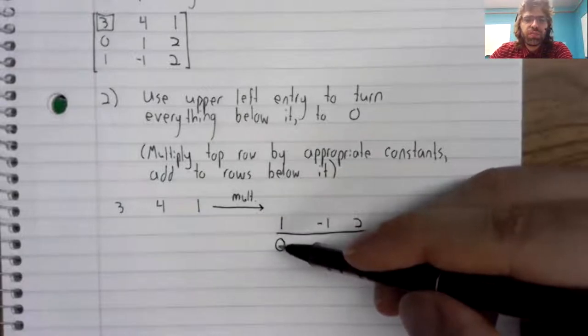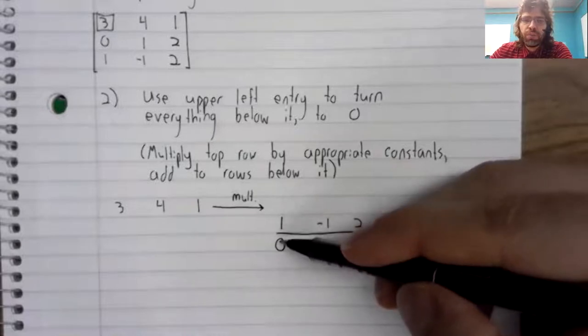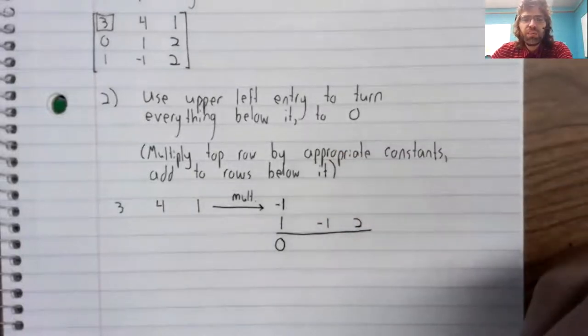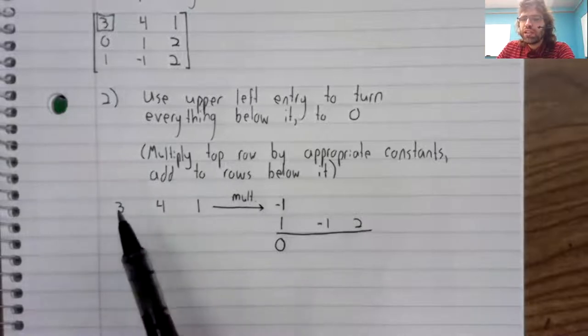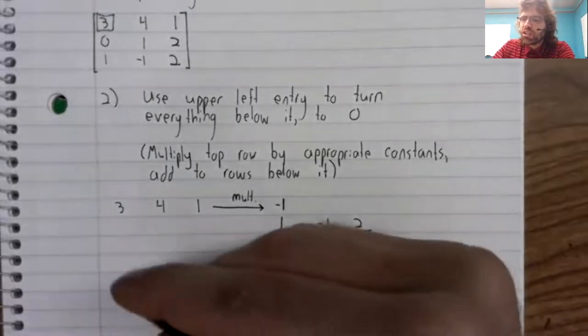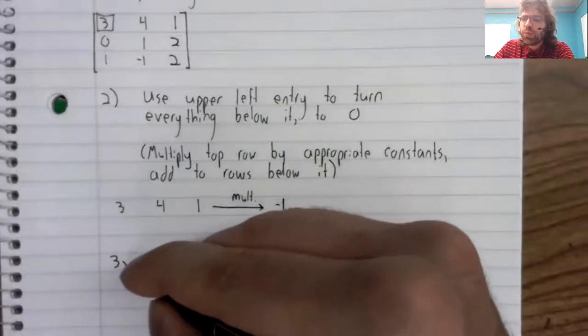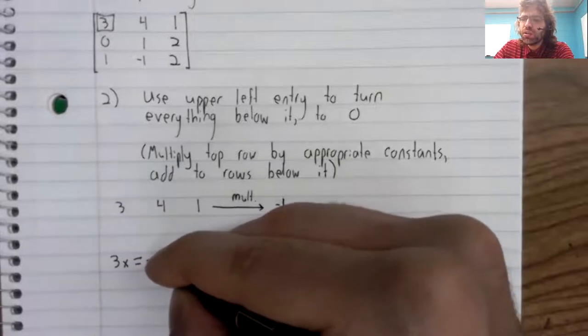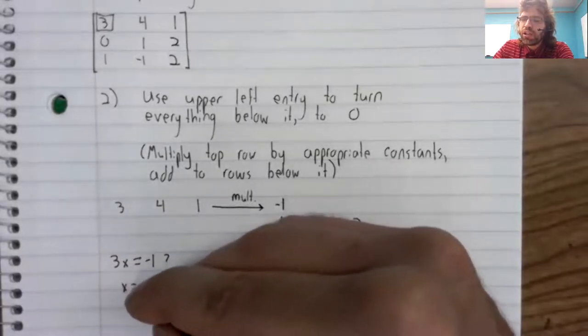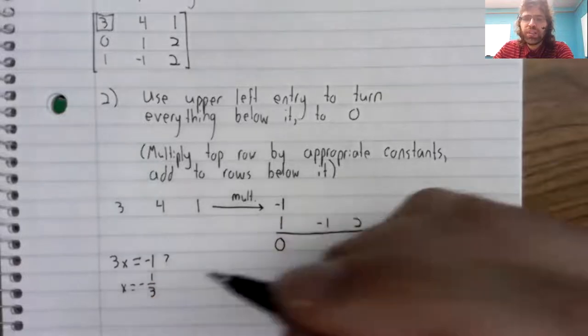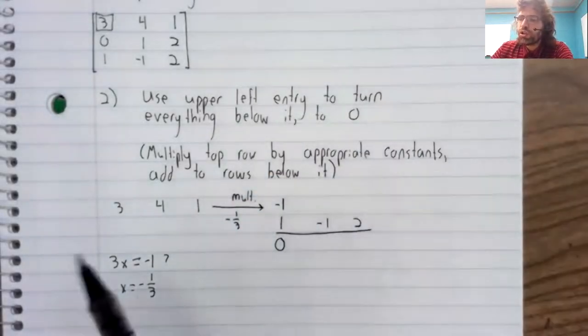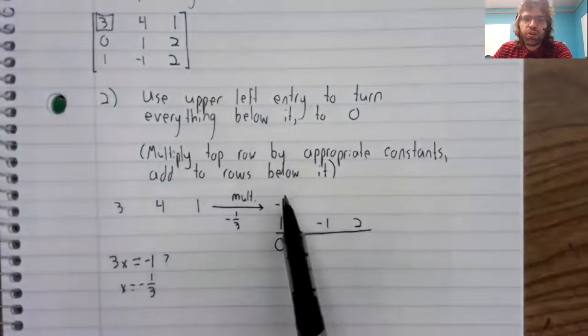What constant? If we're doing addition here, and we want to have this be zero, that needs to be a negative one. So this three needs to turn to negative one. And we ask ourselves, three times what constant will equal negative one? And we find that the constant we need is negative one third.